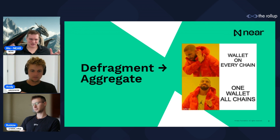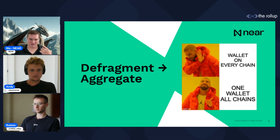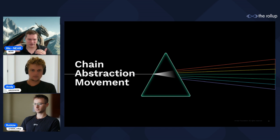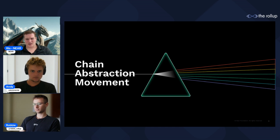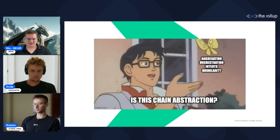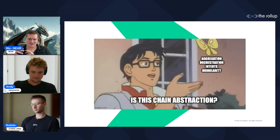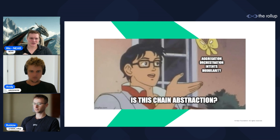Instead of defragmenting, we want to aggregate everything and abstract it. Instead of a wallet on every chain, we want just one wallet for all chains. Not just a wallet — we want one account, whether that's an account the user owns or a smart contract, that can navigate the whole space. That's really what we introduced as the chain abstraction movement. A ton of people are gathering around it — Ethereum folks, Cosmos — and it's gaining momentum across other ecosystems as well.